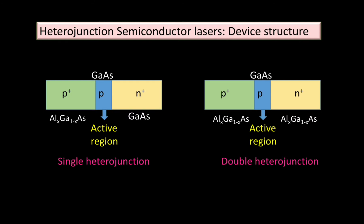Let us look at the cross-sectional view. In the single heterojunction semiconductor laser, the active region (p-type) and the n-plus region are both made up of gallium arsenide, while the p-plus region is made up of aluminum gallium arsenide. In the double heterojunction semiconductor laser, the active region is made up of gallium arsenide, and both the p-plus and n-plus regions are made up of aluminum gallium arsenide.